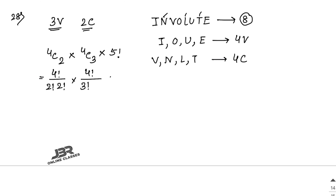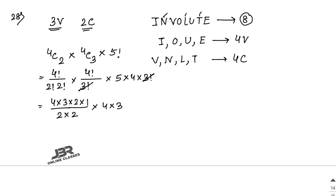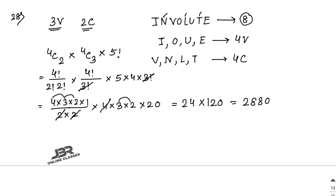Calculating: 4C2 = (4 × 3)/(2 × 1) = 6, and 2 × 2 = 4. Then 4C3 = 4. And 5! = 120. So 4 × 6 × 120. Let me compute: 4 × 3 = 12, 12 × 2 = 24, and 3 × 2 = 6, giving 120. So 24 × 120 = 2880 as your final answer.